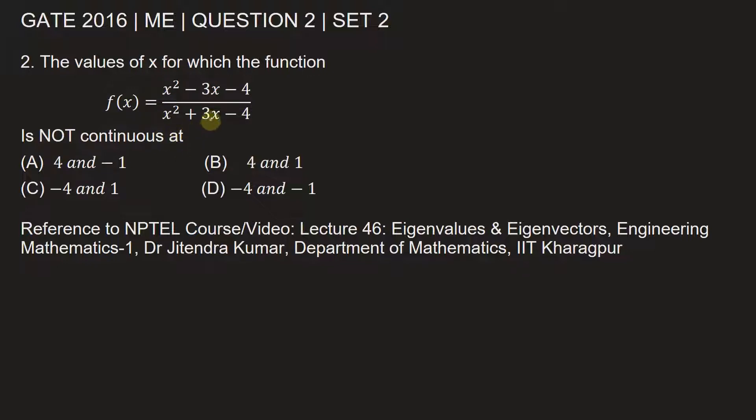So we need to find the value of x for which this function f(x) is not continuous. Let's write the function here: f(x) is equal to x square minus 3x minus 4 divided by x square plus 3x minus 4.